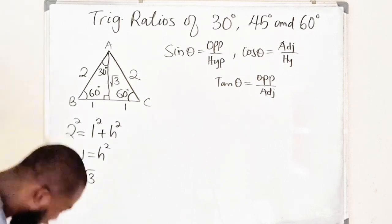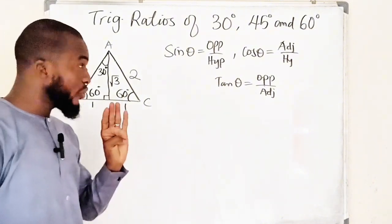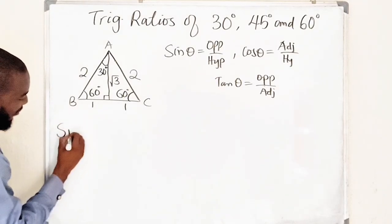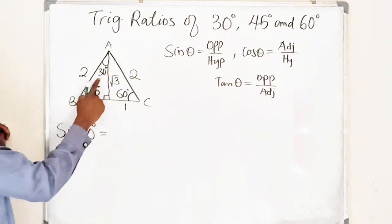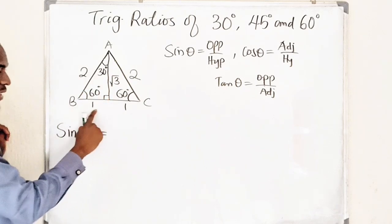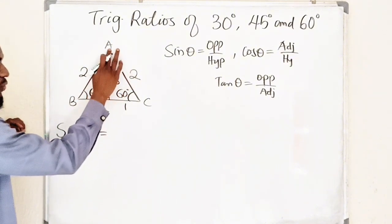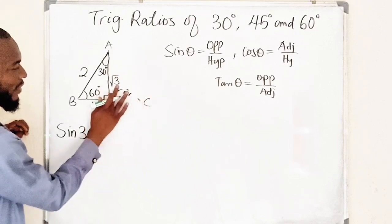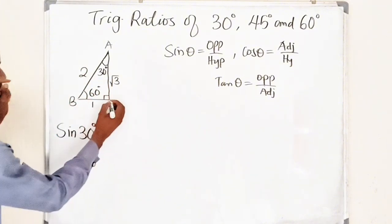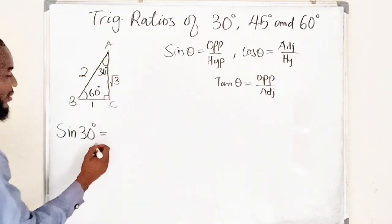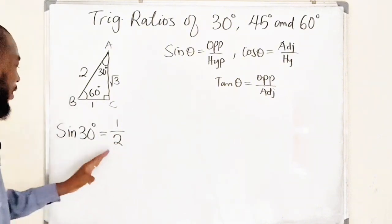So this side length is root three. I would like to start with sine of 30 degrees — we are going to find all six trigonometric ratios for 30 degrees. Sine of 30 degrees equals opposite divided by hypotenuse. The side directly opposite to 30 degrees is one. I'm only considering one of the right triangles. So that gives us one over the hypotenuse, which is two. Therefore, sine of 30 degrees equals one divided by two.